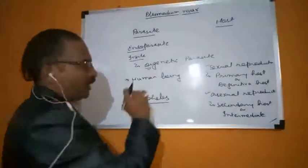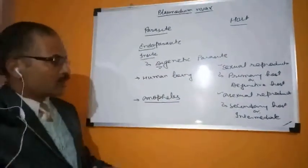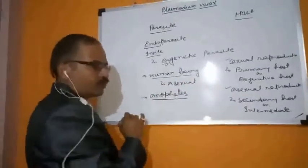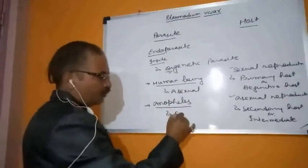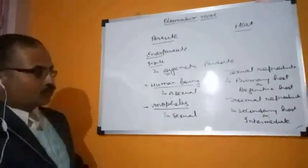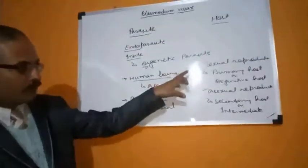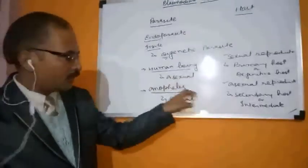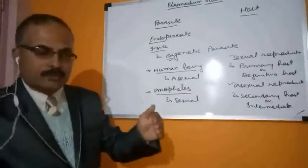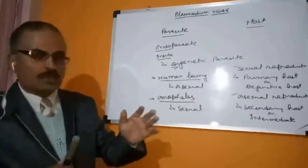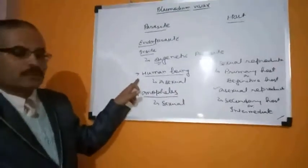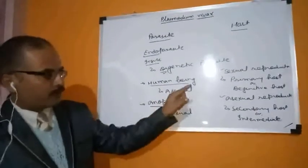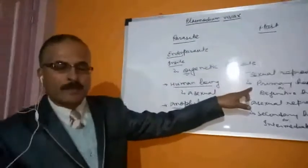In the case of Plasmodium, in human beings it performs asexual reproduction, whereas in the Anopheles mosquito it performs sexual reproduction. So according to this rule, the Anopheles mosquito should be the primary host and human beings should be the secondary host. This is applicable in medical science.